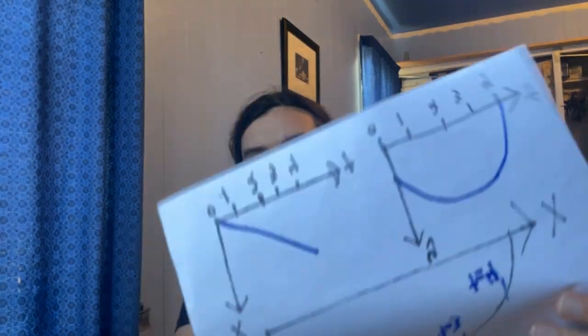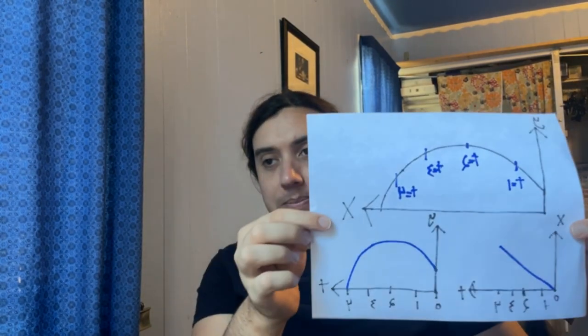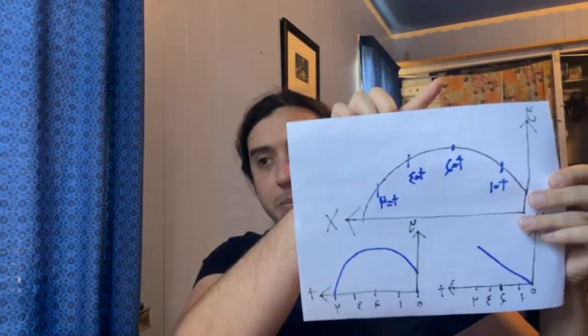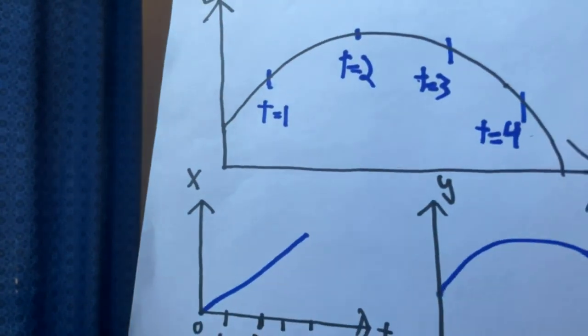Because eventually we are going to want to start thinking about, like, well, areas. Because, you know, you combine two dimensions of space, and instead of a distance, you get an area, you combine three dimensions of space, you get a volume, and we're eventually going to want to think about those things, too. But for now, let's just think about one object moving in two dimensions.